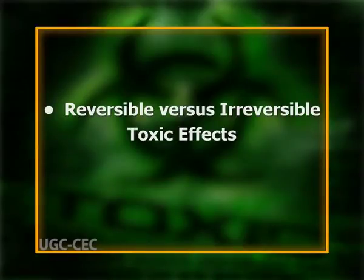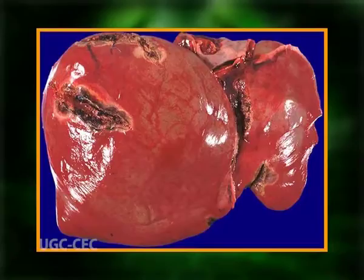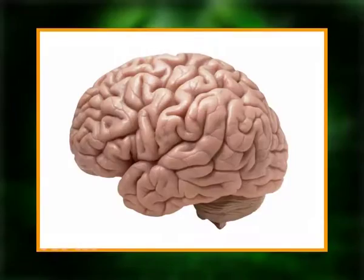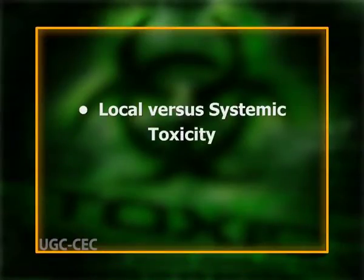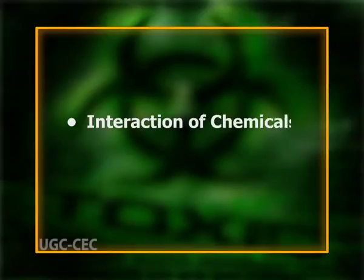Reversible and irreversible toxic effects: if a chemical produces pathological injury to a tissue, the ability of that tissue to regenerate determines whether the effect is reversible or irreversible. For the liver, with its high regeneration ability, most injuries are reversible, whereas injury to the central nervous system is largely irreversible because differentiated CNS cells cannot be replaced. Local and systemic toxicity: local effects occur at the site of first contact between the biological system and the toxicant, while systemic effects occur at a distant site from where absorption has occurred.